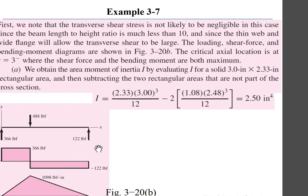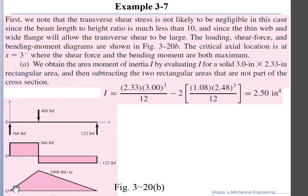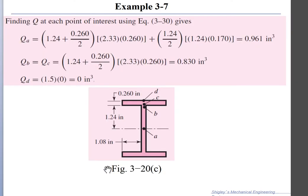Next, we determine the moment distribution. With the point force applied, we find the two reactions: 366 lb and 122 lb. From these we draw the shear force diagram and bending moment diagram. The moment rises linearly to a maximum of 1098 lb·in at 3 inches from the left support, then drops to zero at the right support. The gradient of the moment gives the shear, confirming there must be a transverse shear stress.